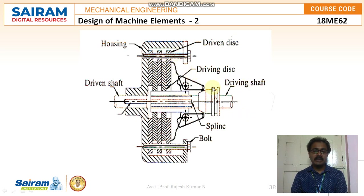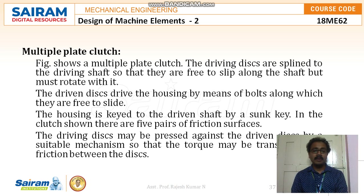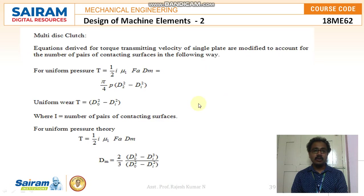All these plates operate with the help of splines, and the housing is connected to the clutch plates with the help of bolts. In the sketch, the driving discs are splined to the driving shaft so they are free to slip along the shaft but must rotate with it. The driven discs drive the housing by means of bolts along which they are free to slide. The housing is keyed to the driven shaft by a sunk key. In the clutch shown there are five pairs of friction surfaces, and the driving disc may be pressed against the driven disc by a suitable mechanism to transmit torque by friction.